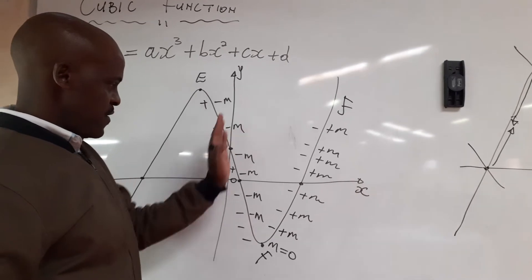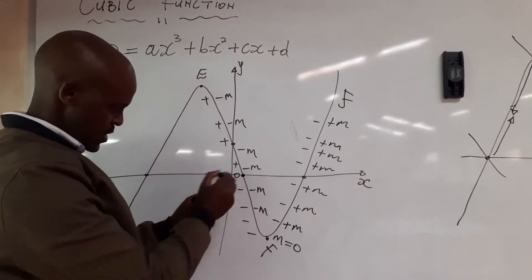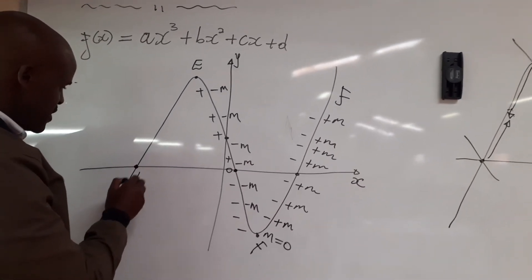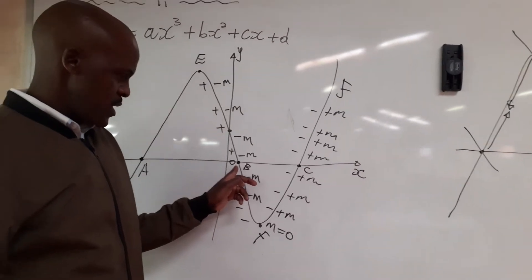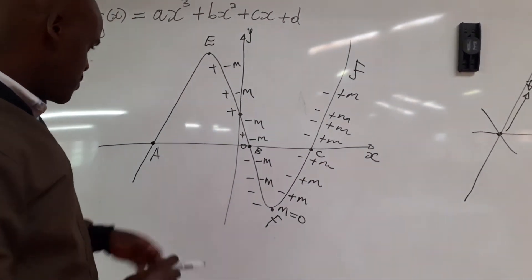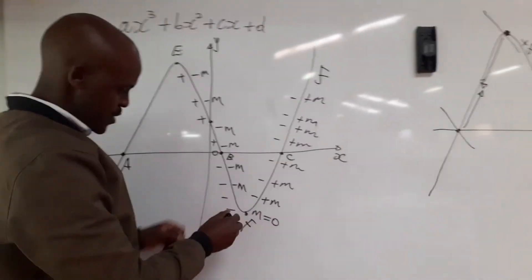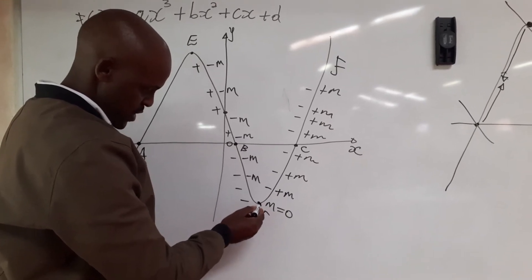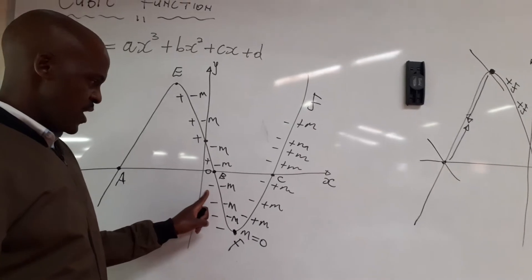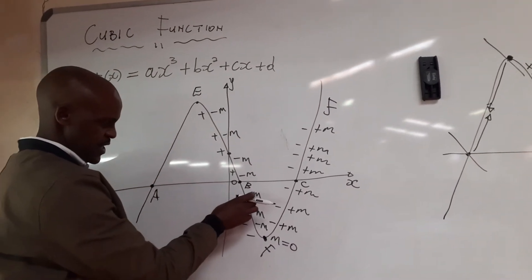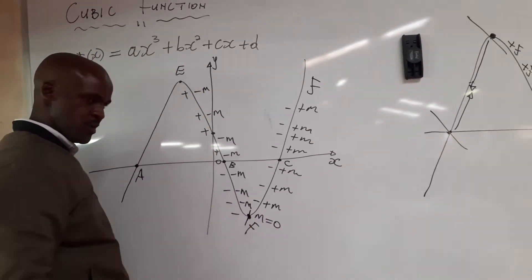A positive times a negative will give us negative. Let's start just below our x-intercept. We have point a, point b, and point c — point b is our x-intercept, point c is our x-intercept, and point a is also our x-intercept. Just below point b we've got negative times negative, up to just above this x-intercept — negative times negative gives us a positive answer.